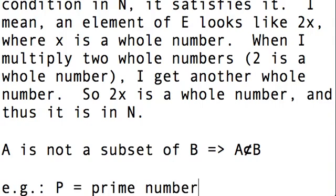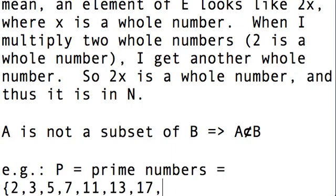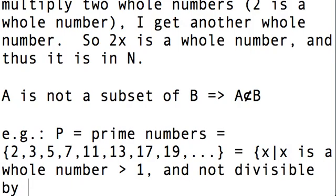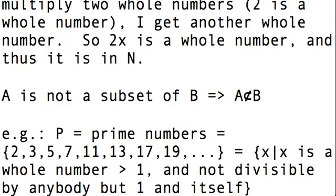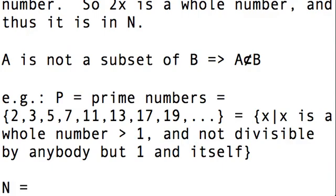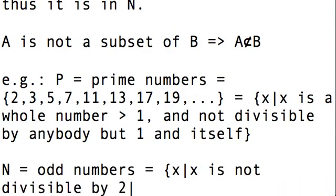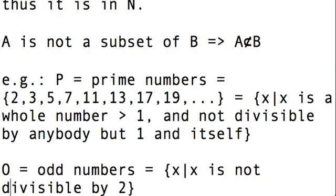So for example here, let P be prime numbers, which are the numbers 2, 3, 5, 7, 11, 13, 17, 19, etc. And we can write this in set builder notation: X such that X is a whole number which is greater than 1 and not divisible by anybody but 1 and itself. You might think that 1 is a prime number, but it makes more sense for it not to be. And let's take O to be the odd numbers: X such that X is not divisible by 2.